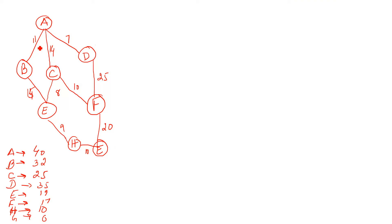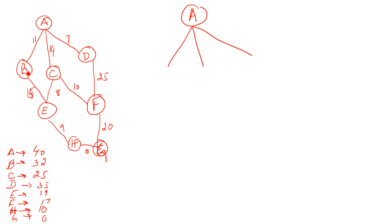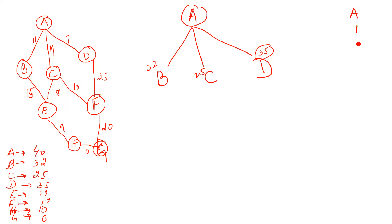Now, the second example. The same scenario applies — we have actual costs but we only consider heuristic costs. The name 'greedy best-first search' means we are greedy to find the lowest cost. Starting from A, we have three different routes: to B, C, and D. The heuristic cost of B is 32, C is 25, and D is 35. We expand C because its cost is lowest, so our path so far is A to C.